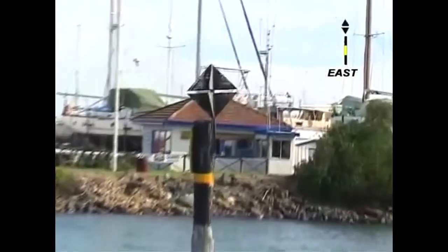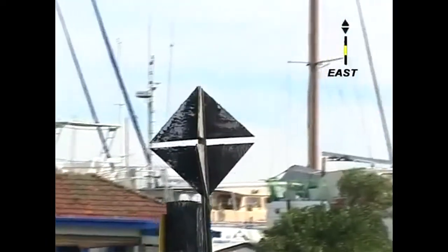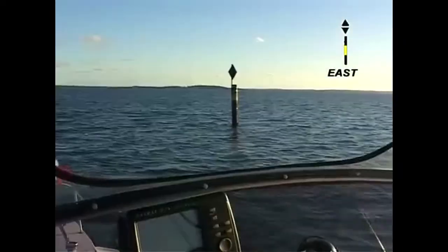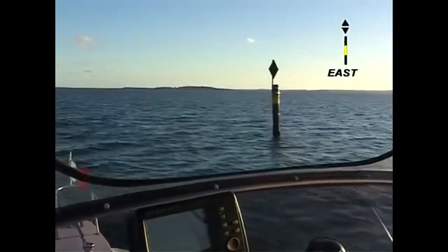East cardinal marks indicate that the safe water is east of the mark. The two black cones point outward. There are two black bands, one above and one below the yellow band.